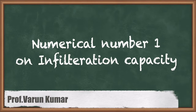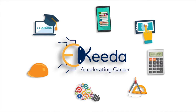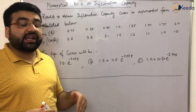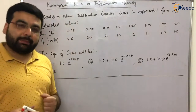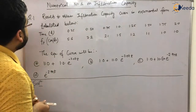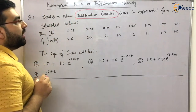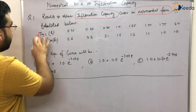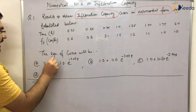Subject: Hydrology, Chapter: Infiltration, Topic: Numerical number one on infiltration capacity. We have already discussed infiltration capacity, the various equations — Horton's equation, Phillips equation — and other related concepts. Now let us solve a numerical. The numerical says to obtain the infiltration capacity curve in exponential form, and the results are tabulated below.